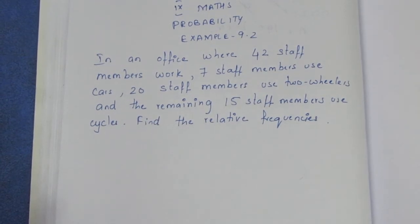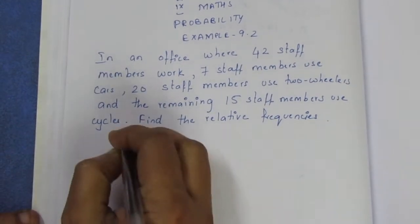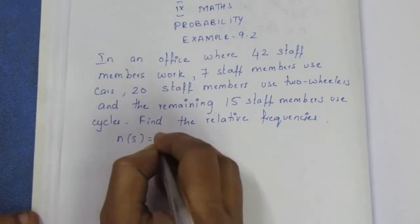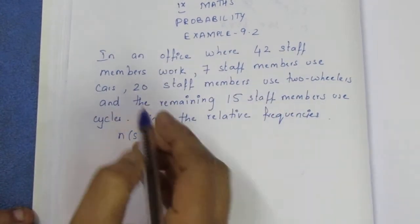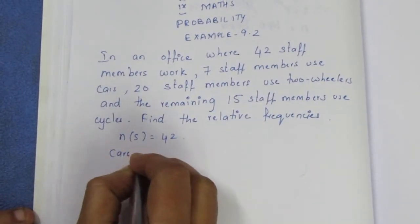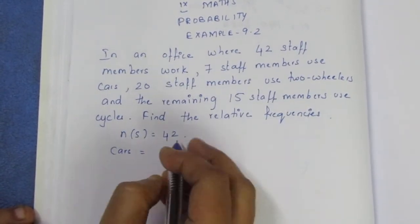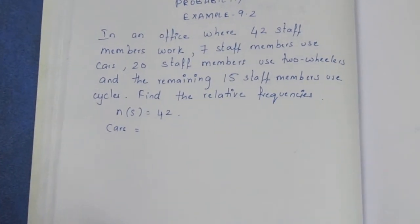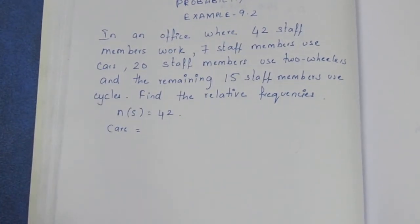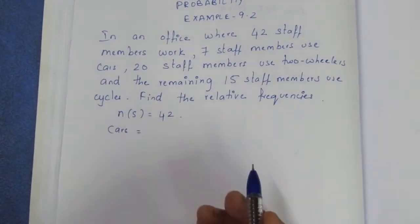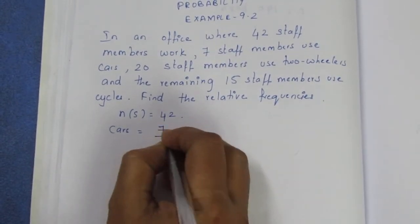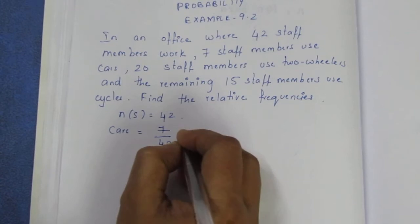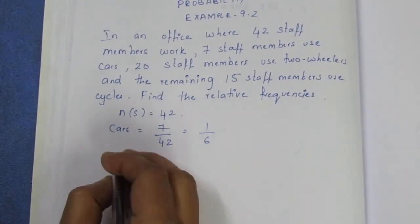So now the total number is 42. For cars: the number of staff using cars is 7, so the probability is 7 by 42. Cancel by 7: 1's are 7, 6's are 42, giving us 1 by 6.